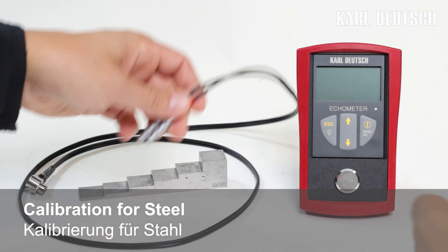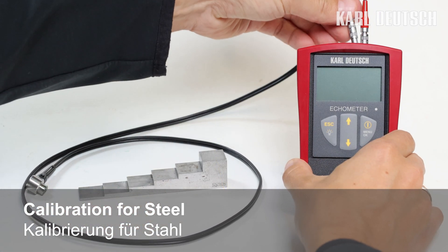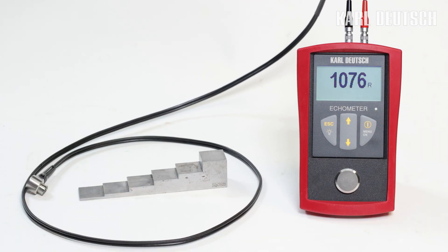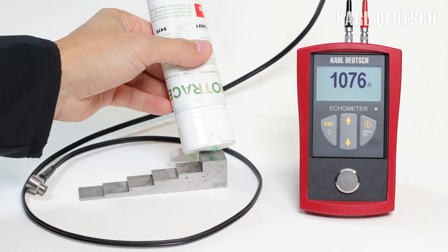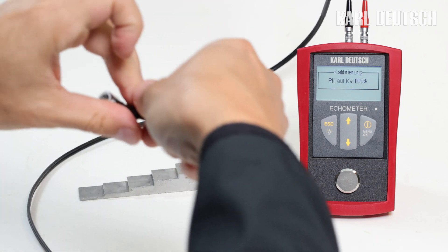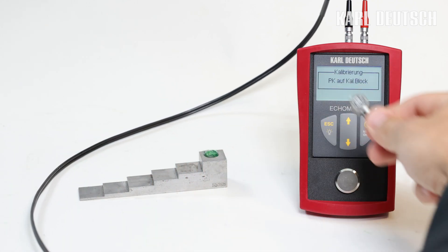Measuring wall thickness with an ECHOMETER is simple. The device is switched on and the probe is connected. Now the probe is placed on the calibration plate integrated into the instrument with a little coupling agent and will be automatically adjusted.